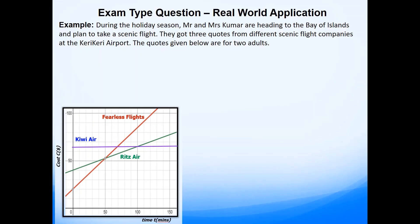In the previous videos I've already gone through the Achieved and Merit criteria for this achievement standard — please do check those videos out. The example we are looking at is: during the holiday season, Mr. and Mrs. Kumar are heading to the Bay Valley and plan to take a scenic flight. They've got three quotes from different scenic flight companies at the character airport, and the quotes given below are for two adults.